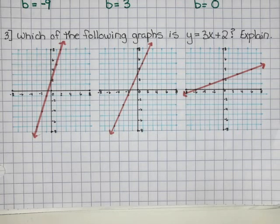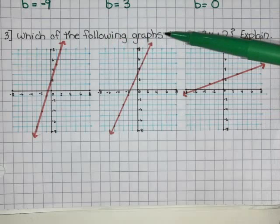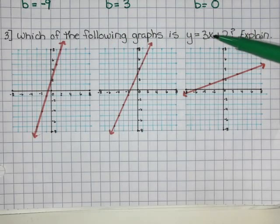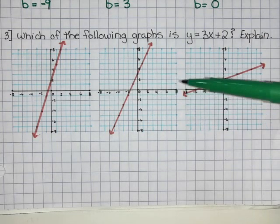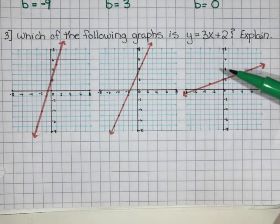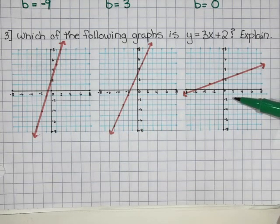This is the fourth part of our video on understanding the equation of a line. The next part of our question says: which of the following graphs is y = 3x + 2? Explain. I have three graphs here. I had to draw them, so they're not perfect, but they're okay.